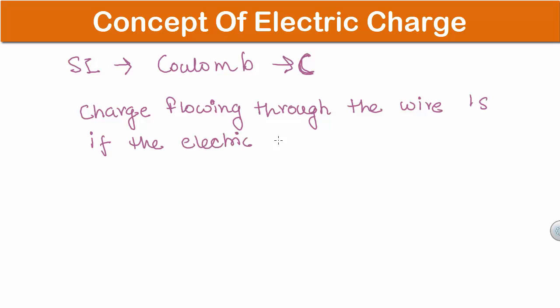If the electric current in it is 1 amperes. Now charge on an electron is E is equal to minus 1.602 into 10 to the power minus 19 coulombs. And charge on proton is positive of this value. This is it for now. Thanks for watching.